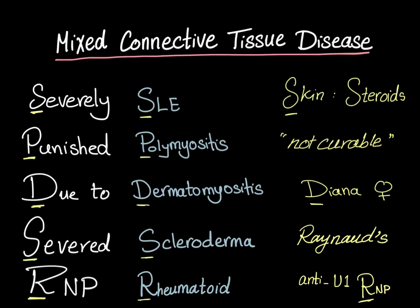Mixed connective tissue disease is a mix of five different conditions in one disease. The mnemonic to remember all the diseases is: 'Severely punished due to severed RNP.' Severely is SLE, punished is polymyositis, due is dermatomyositis, severed is scleroderma, and RNP is rheumatoid arthritis — and also represents the anti-U1 RNP antibody.